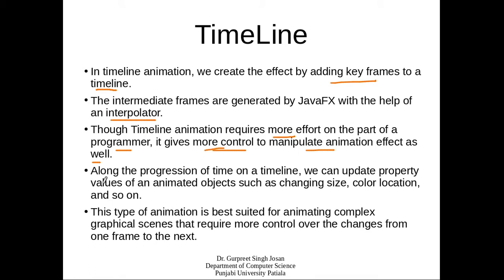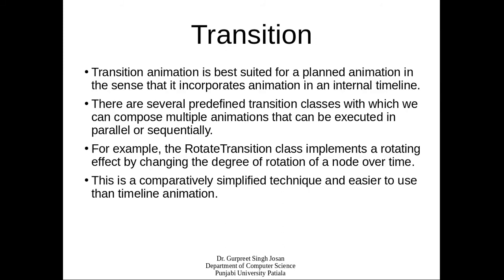Along the progression of time on a timeline, we can update property values of an animated object such as changing size, color, location, and so on. This type of animation is best suited for animating complex graphical scenes — for example, scenes in video games. For simple animations you can use the transition option, but for complex scenes like animation films or games you should use timeline animation.